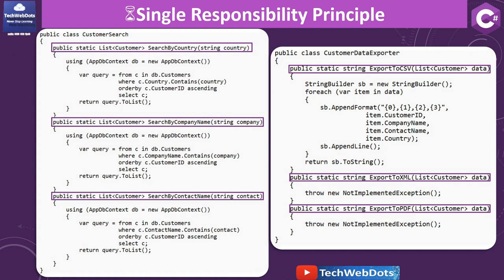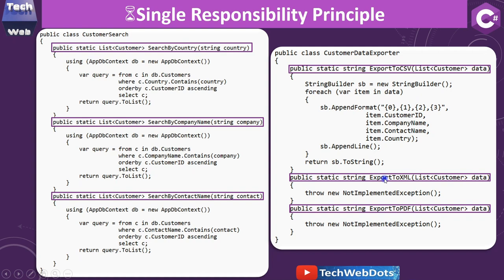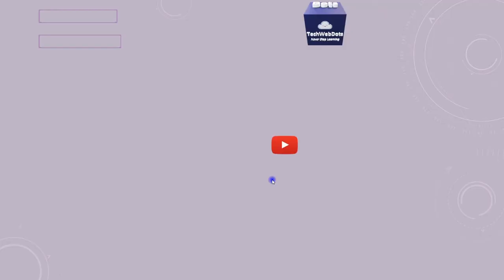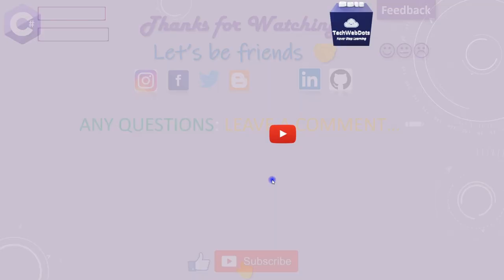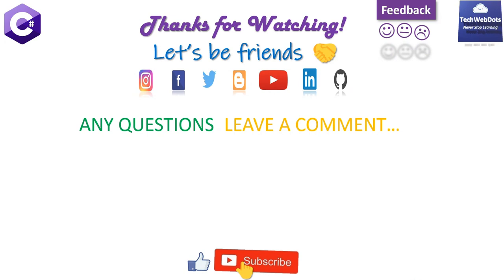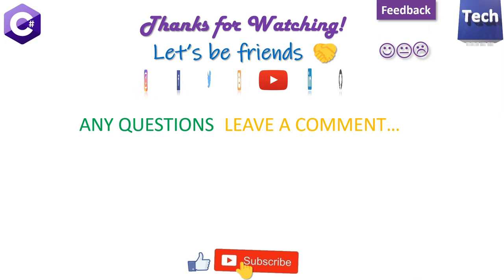If you are working on ASP.NET with Entity Framework, you will be familiar with LINQ queries, but the key point is about the classes. Our CustomerSearch class contains SearchByCountry, SearchByCompanyName, and SearchByContactName. The CustomerDataExporter class can have ExportToCSV, ExportToXML, and ExportToPDF — no implementation right now but you can easily implement it. If you have any questions, leave them in the comment box. Please give your feedback; that's the only inspiration for me to create such videos. I will see you in the next video where I will explain the Open-Closed Principle.